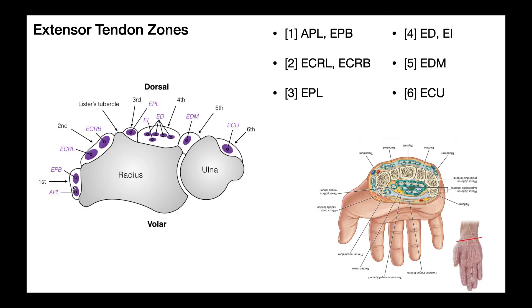The first zone has two tendons: these are the tendons of abductor pollicis longus and extensor pollicis brevis. You can see those two tendons right here — this first one is abductor pollicis longus, and this one is extensor pollicis brevis. Abductor pollicis longus abducts the thumb, and extensor pollicis brevis extends the thumb. Both of these tendons act on the thumb, which makes sense because they're closest to the first digit.